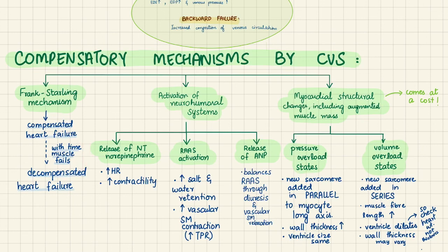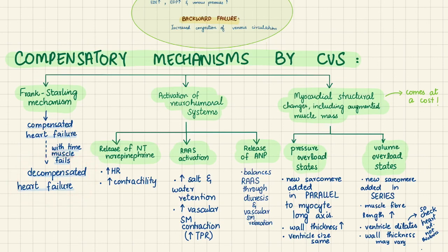With time, however, the muscle undergoes more changes — there is more stress on the cardiac wall and cardiac hypertrophy develops. Eventually this muscle will fail because the greater muscle mass demands more oxygen and nutrients, leading to decompensated heart failure once this compensatory mechanism is exhausted. The second mechanism is activation of neurohumoral systems.